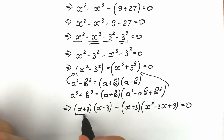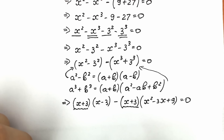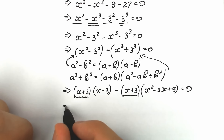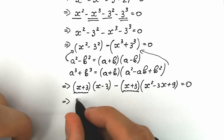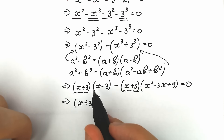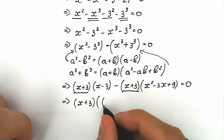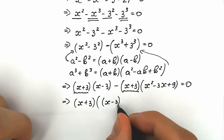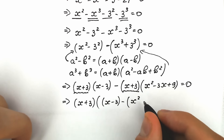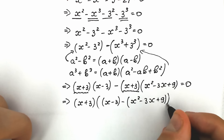If we look closely, we have x plus 3 appearing in both expressions, so we can factor it out. As a result, we have x plus 3 times, in the second parentheses: x minus 3, minus the expression x squared minus 3x plus 9, equal to 0.